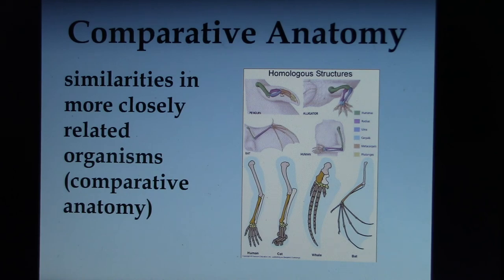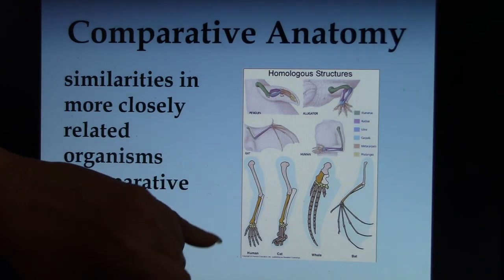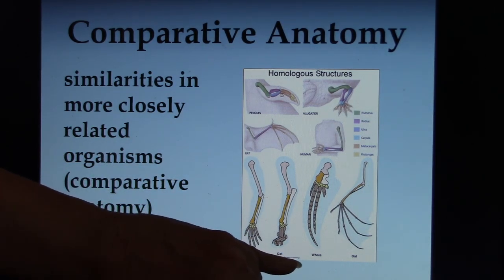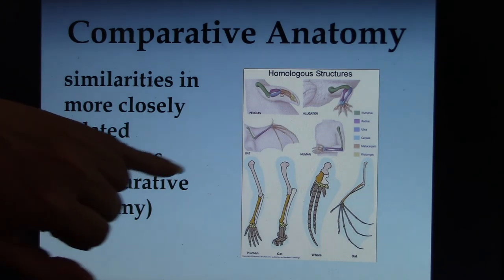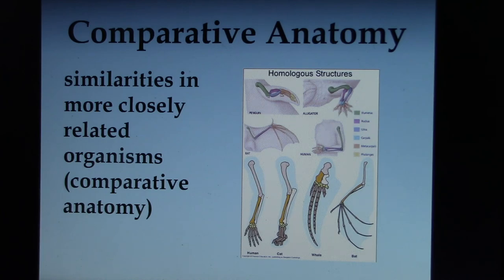Comparative anatomy is another line of evidence. You don't need to memorize all the details, but basically the forearms of humans, cats, whales, and bats — a biped, a quadruped, a swimmer, and a flier — have essentially the same bones. These are homologous structures, but shaped differently because they have different functions. They have adapted over time, and the study of comparative anatomy supports evolution.